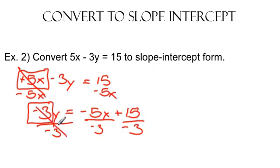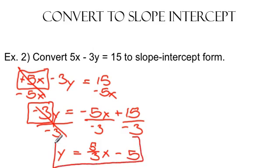Multiplying by negative 3 and dividing by negative 3, well, those are inverse operations, so they cancel each other out, and I'm left with y equals negative 5 divided by negative 3 is just a fraction, 5 over 3. I will leave it as x, and then 15 divided by negative 3 is negative 5, and there you go. There's what that line looks like in slope-intercept form.